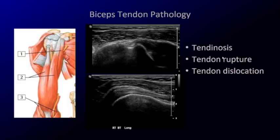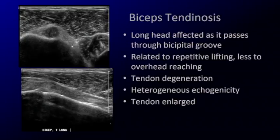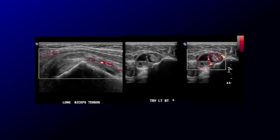Biceps tendons can also be affected with tendinosis — they can rupture, and they can dislocate. Tendinosis manifests as hypoechoic thickening of the tendon; you may have nodular areas or diffusely hypoechoic, heterogeneous appearance. These can predispose to tendon tears or ruptures. You can also get tenosynovitis — inflammation of the surrounding biceps tendon sheath — with fluid that may be entirely anechoic or complicated, and you may see increased vascularity on power Doppler.